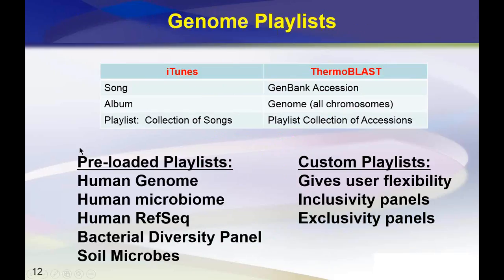ThermoBlast's portal comes preloaded with playlists that users have found useful: the latest human genome, the human microbiome with all 43,000 GenBank accessions, the entire human RefSeq with about 98,000 accessions, and a bacterial diversity panel of approximately 1,200 complete bacterial genomes useful for finding false positives.